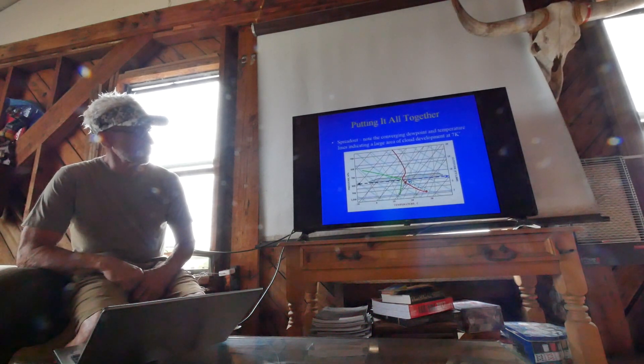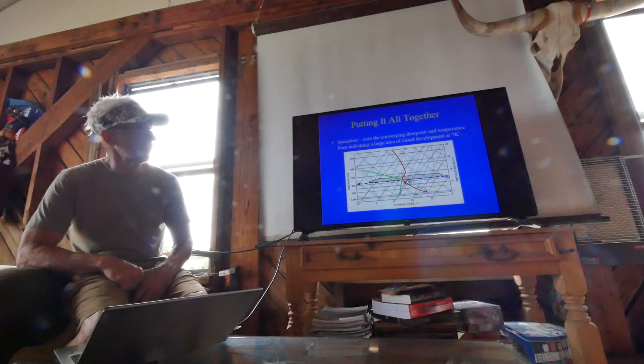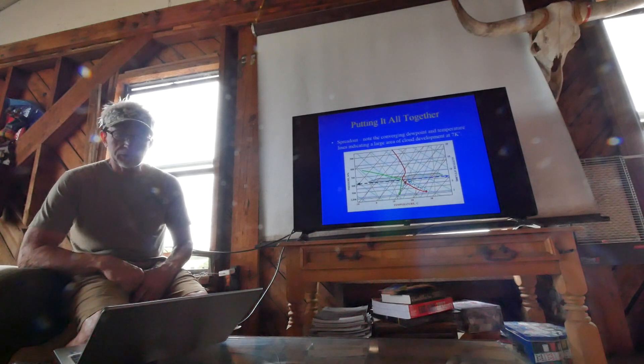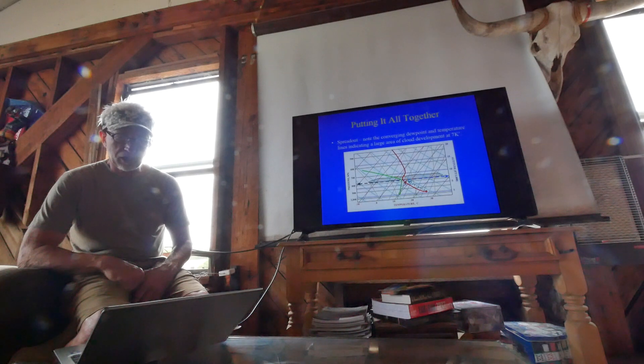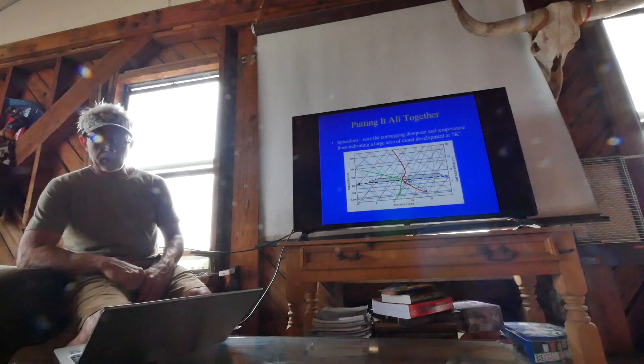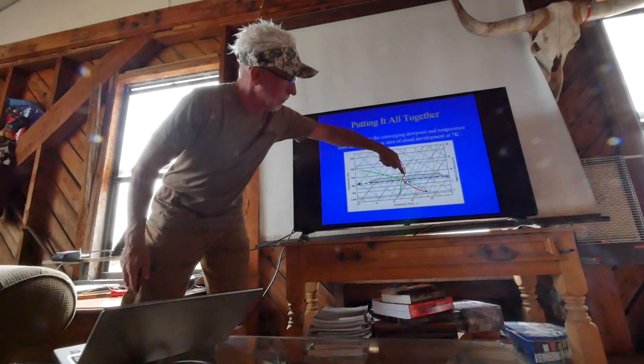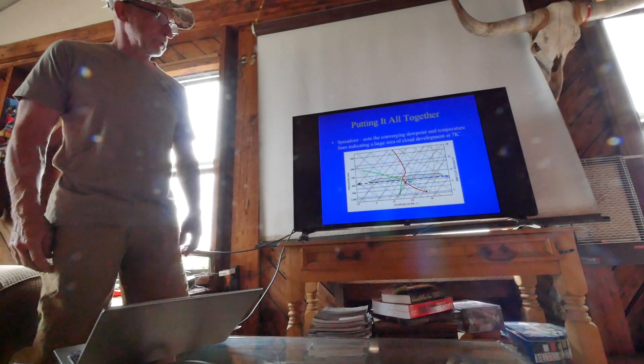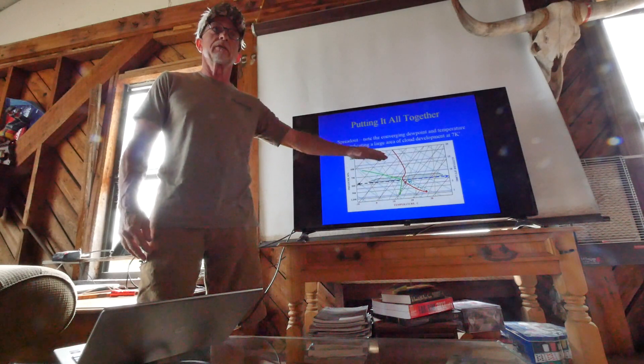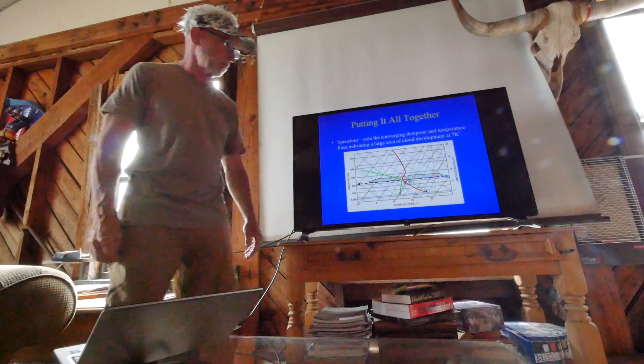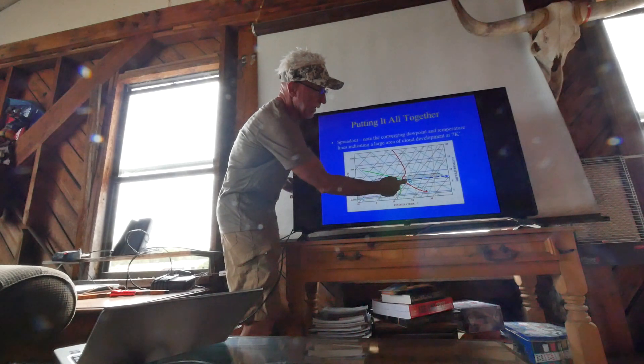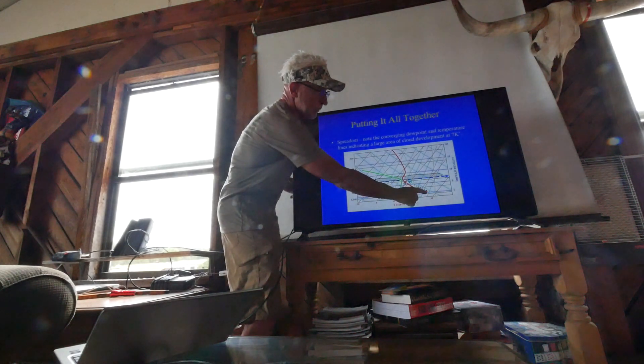Here's an interesting depiction generally known as spread out. The converging dew point and temperature lines indicate a large area of cloud development at 7,000 feet. You can see there's an inversion up here that really caps the lift, stops the lift from going any higher, stops the cloud formation from going any higher because it reached equilibrium with its surroundings. You've got the dew point here following the dew point line, the fixed dew point line. It meets up with the hot parcel of air that is cooling adiabatically by the dotted line. Where they meet, they form a cloud.